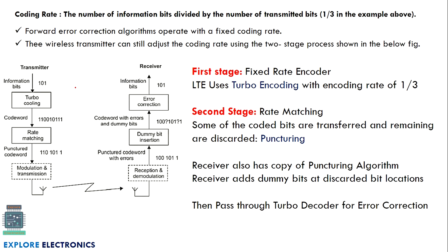In this block diagram you can see there is a transmitter and receiver. The process converts the information into 9 bits. Before that we need to understand the coding rate — the number of information bits divided by number of transmitted bits. In our example, information bits are 3 and the codeword is 9 bits, so the coding rate is 1/3. The receiver uses the same coding rate to get the information back.